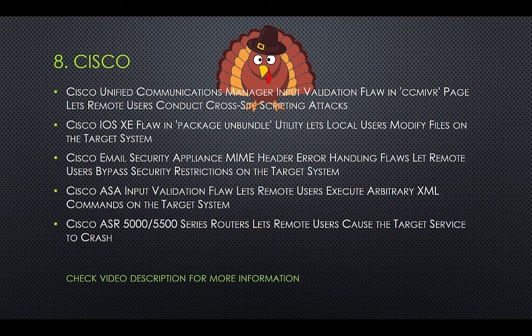Number 8: Cisco. Cisco Unified Communications Manager input validation flaw in the CCMI VR page lets remote users conduct cross-site scripting attacks. Cisco IOS XE flaw in the Package Unbundle utility lets local users modify files on the target system.